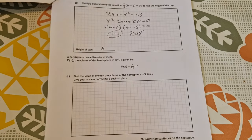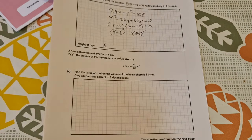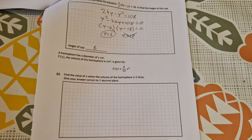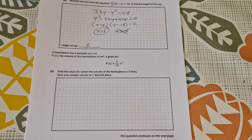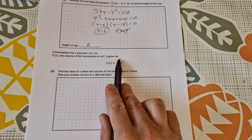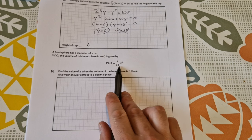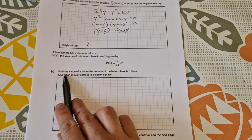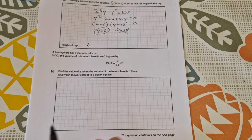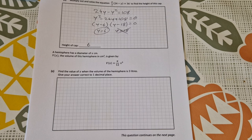Part C. A hemisphere has diameter of x centimeters. V of x, the volume of this hemisphere in centimeter cubed is given by V of x is equal to pi over 12 x cubed. Find the value of x when the volume of this hemisphere is 3 liters and give your answer correct to one decimal place.